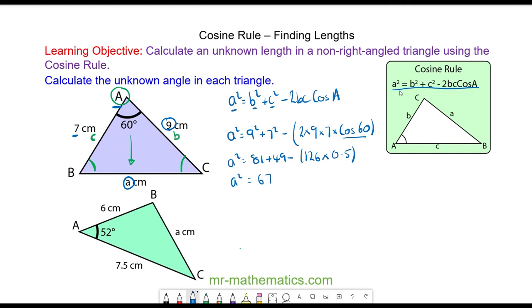So a squared is equal to 67. To work out the length of a we need to square root both sides because the square and the square root will cancel. So the length of a will be equal to approximately 8.2 to 1 decimal place.